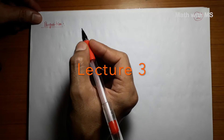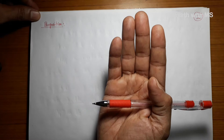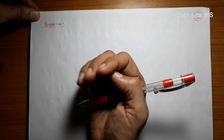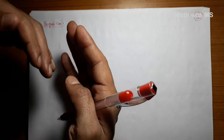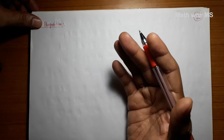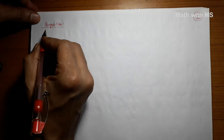Welcome to lecture three of the course Representations of Finite Groups. In the last class, we defined what is an irreducible representation, a completely reducible representation, and a decomposable representation. Today we are going to explore these ideas further and hopefully prove Maschke's theorem: every complex representation of a finite group is completely reducible, i.e., it can be written as a direct sum of finitely many irreducible representations. Once we prove this, the focus will be to understand irreducible representations of a given group.